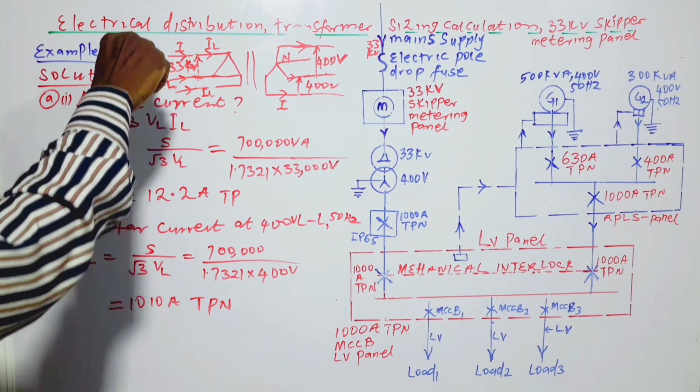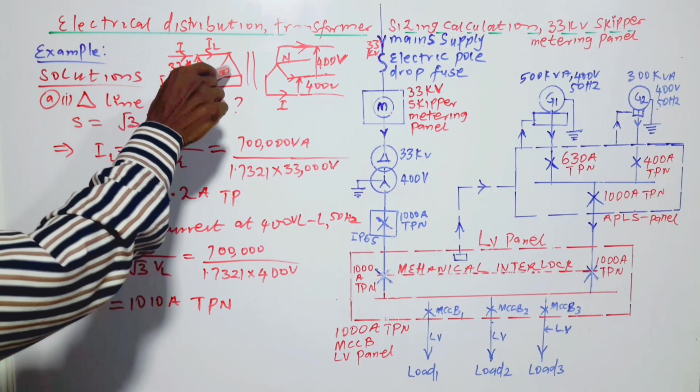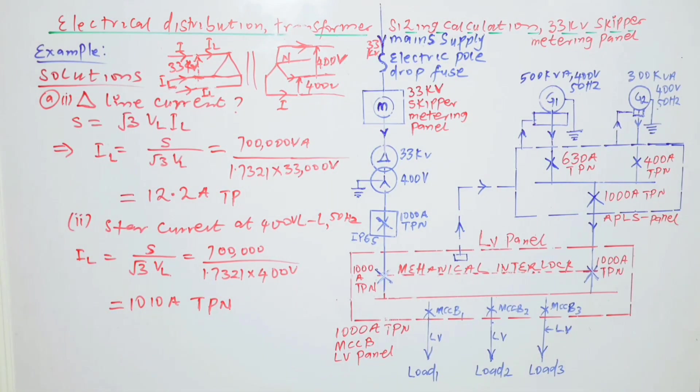And when we calculate this one, if it is properly calculated, this is the answer: 12.2 amperes triple phase. Because we have three phases here, 1, 2, 3, and three lines as well of equal magnitude of current. So that is the solution to the first part of A.